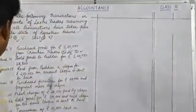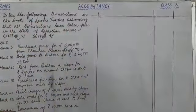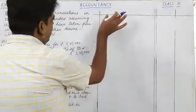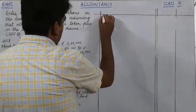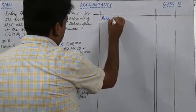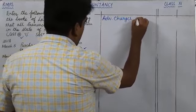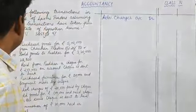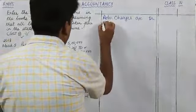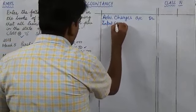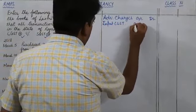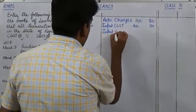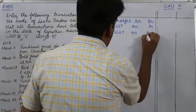Now see a few more transactions. Next one is advertisement charges of rupees 20,000 paid by cheque. This is our expense, and you know all expenses must be debited. So advertisement charges account will be debited. And again we have to pay input CGST as well as input SGST, so input CGST account will be debited and input SGST account will be debited.